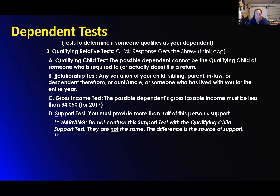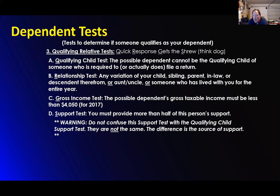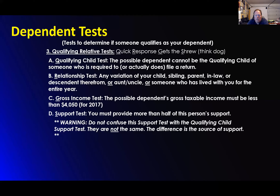Test to determine if someone qualifies as your dependent — now this is a qualifying relative, not just a qualifying child. The qualifying child test: they cannot be the qualifying child of someone who is required to file or actually files a tax return. They cannot be somebody else's qualifying child. The relationship test: any variation of your child — sibling, parent, in-law, or descendant — aunt and uncle, or someone who has lived with you for the entire year. This is a qualifying relative, not just a qualifying child.